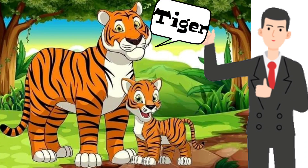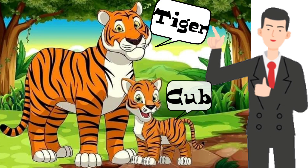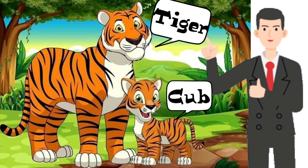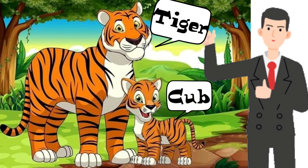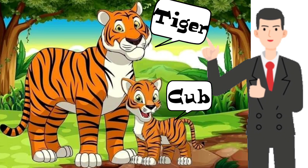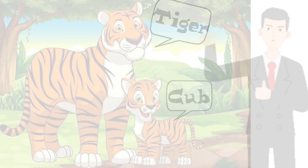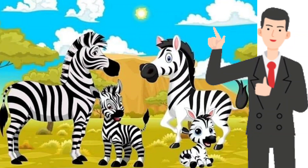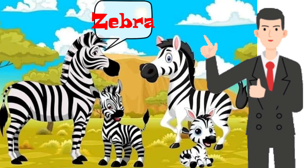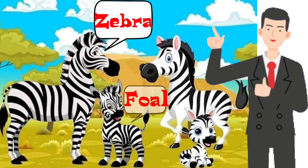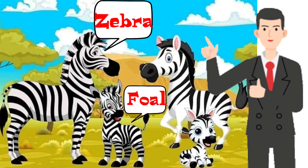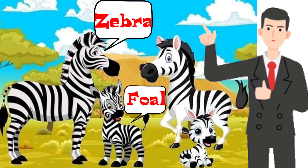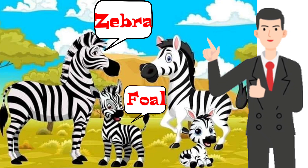Tiger, Cub. Young one of tiger is also called Cub. This is Zebra and this is Foal. Young one of zebra is called Foal.